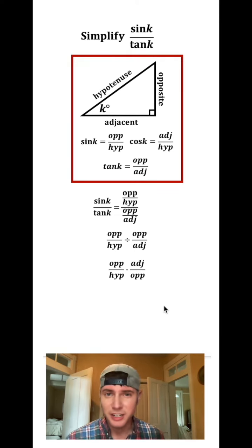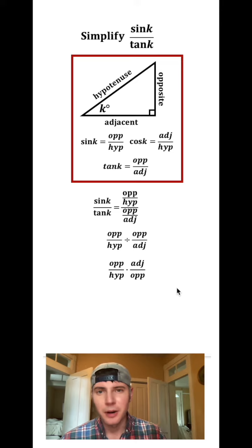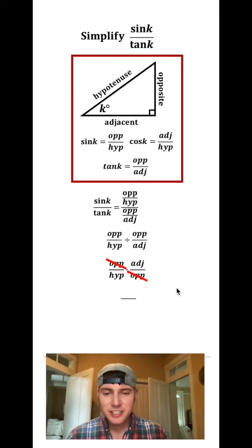Next, we can simplify this by crossing the opposite on top here with the opposite on bottom here. Now we're left with a fraction where adjacent is the only thing on top and hypotenuse is the only thing on bottom.